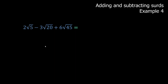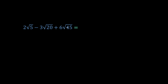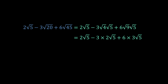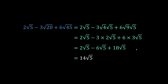For a more complex example with square root of five, square root of 20, and square root of 45 — we can break 20 into square root of four times square root of five, and 45 into square root of nine times square root of five. Square root of four becomes two, square root of nine becomes three. Multiplying through gives us two root five, negative six root five, and 18 root five. All have the variable root five, so two minus six plus 18 gives us 14 root five.